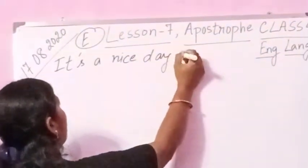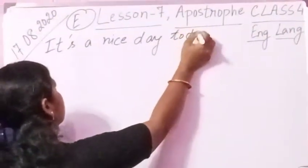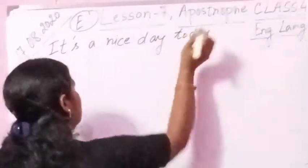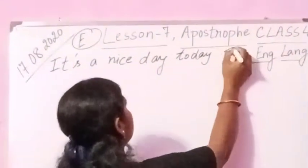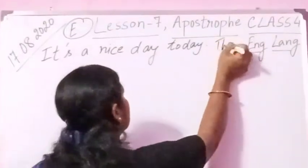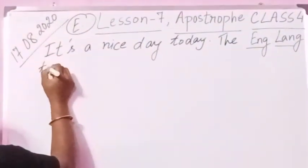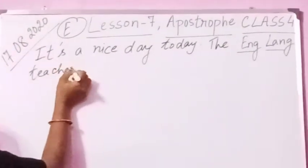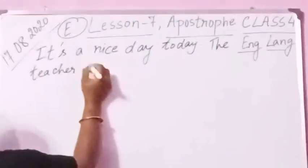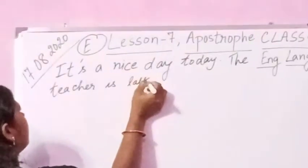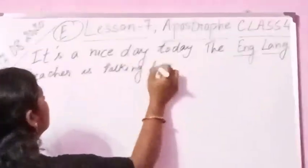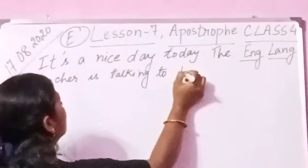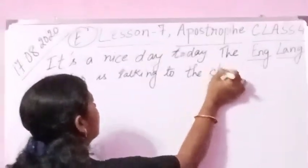You have to write this down in your copy. The next sentence is: the teacher is talking to the children. There is no change here — no contraction needed.